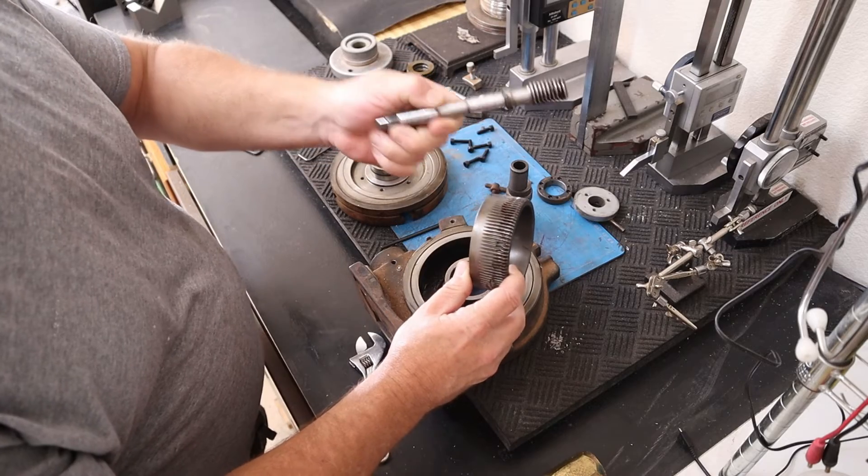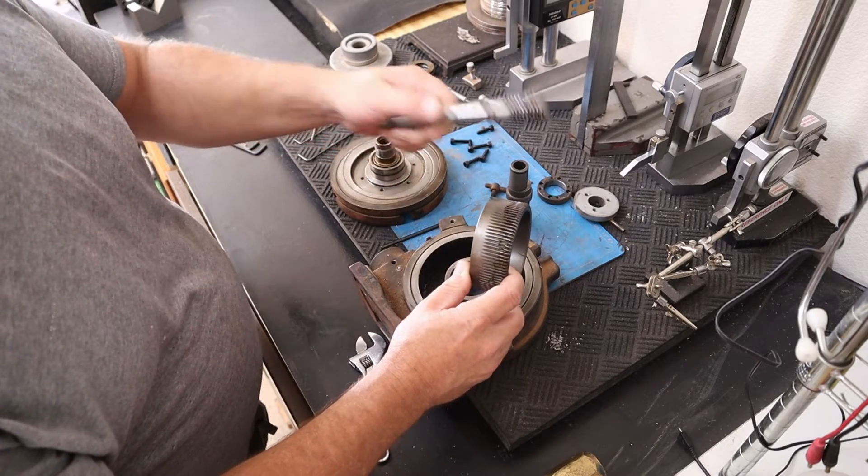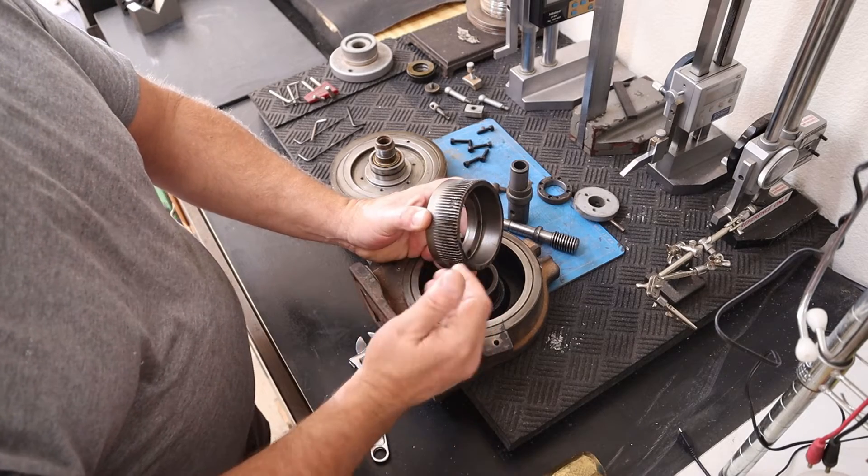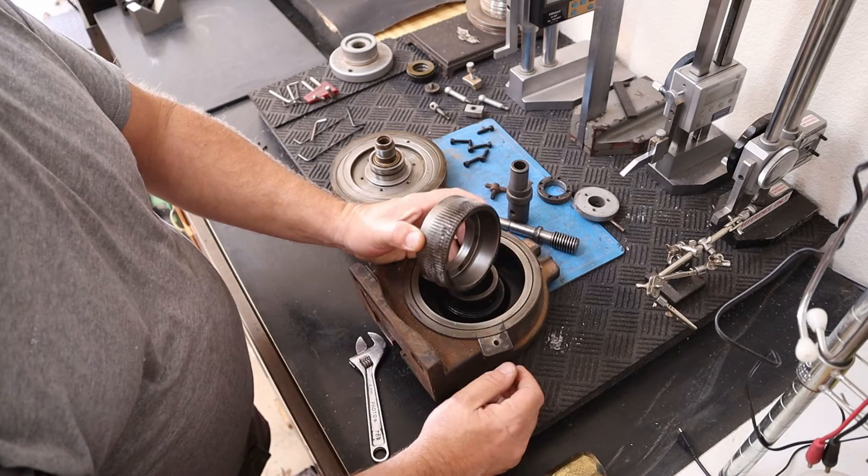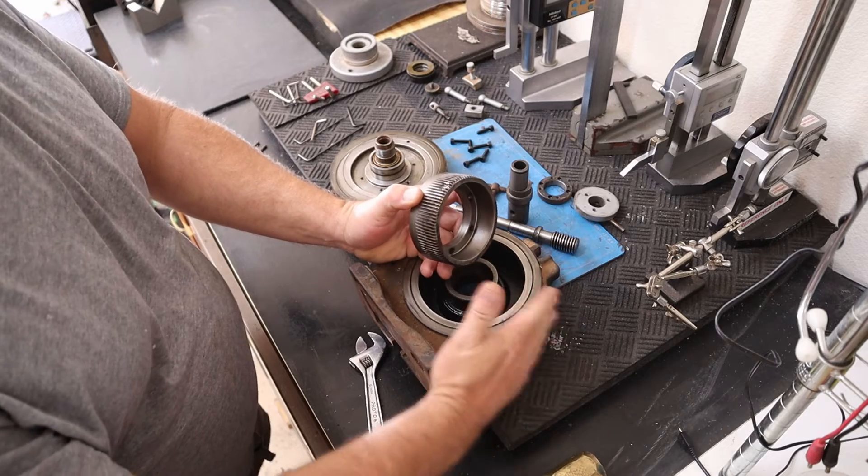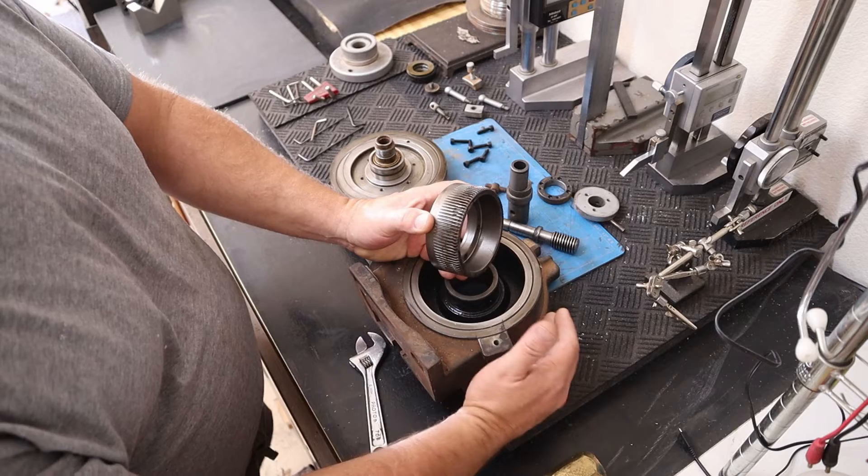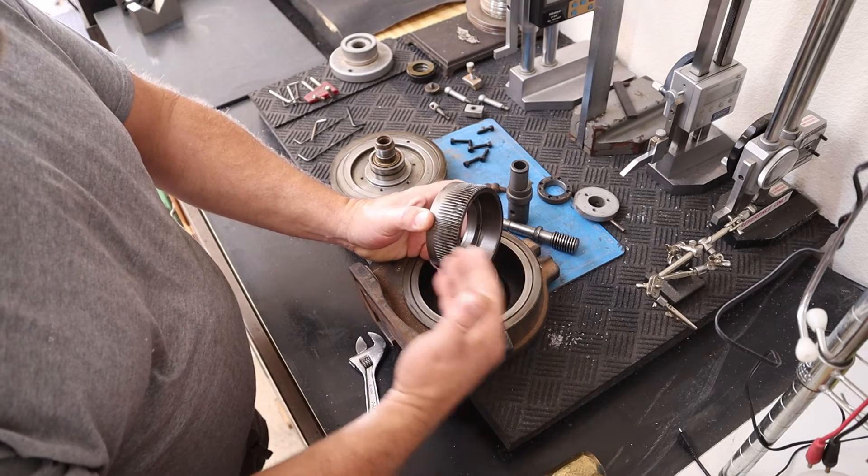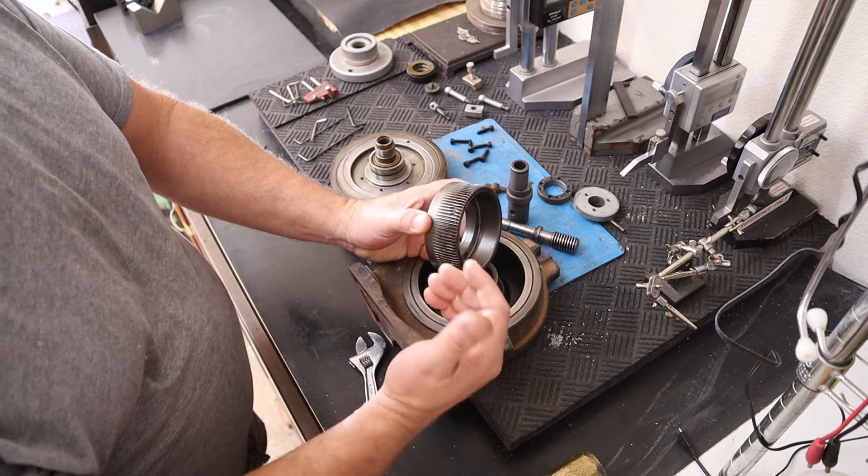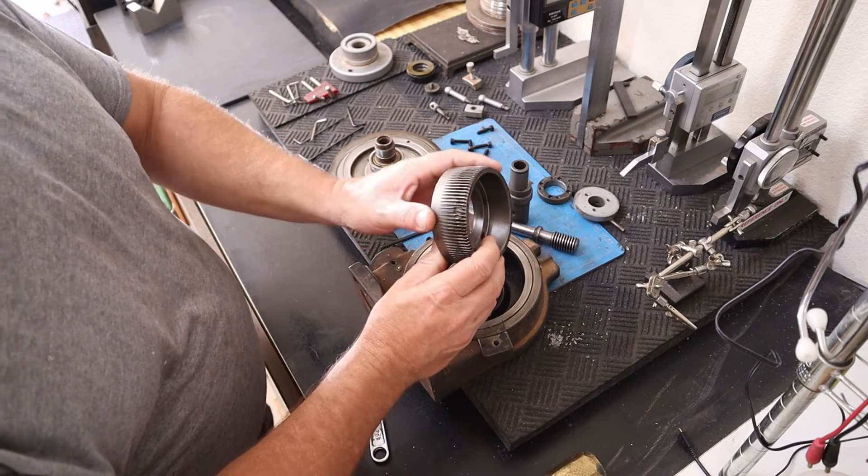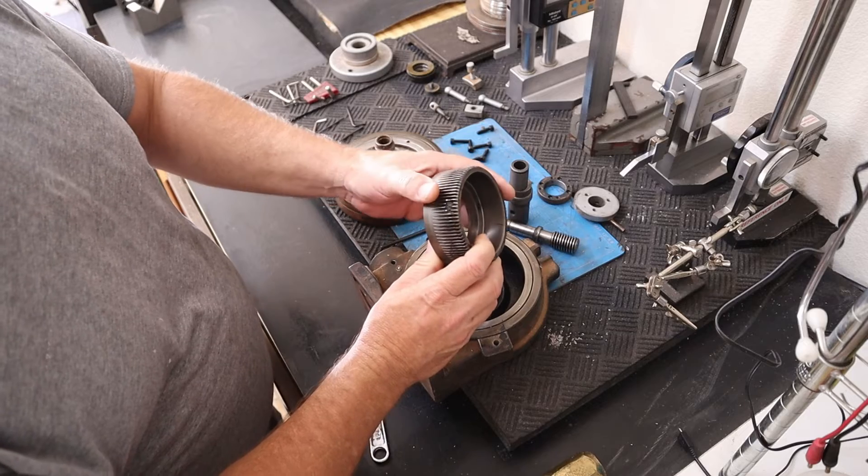Same thing with the worm and shaft—they're both on backorder. So our best bet is to attempt to fix what we have here and get this straightened up and back together instead of trying to wait. If we don't do well fixing this, that's okay, we'll go ahead and order those parts.